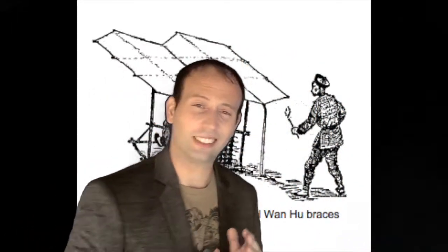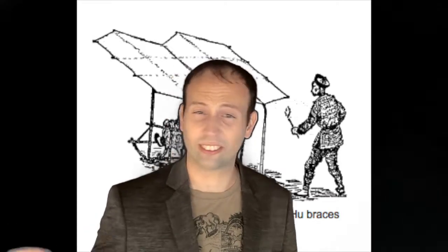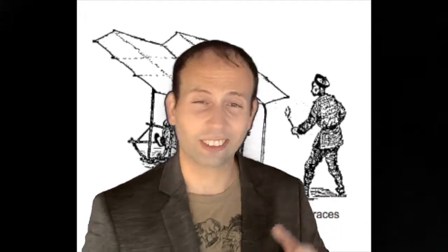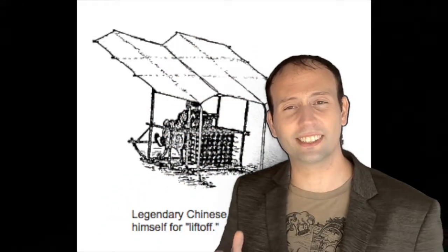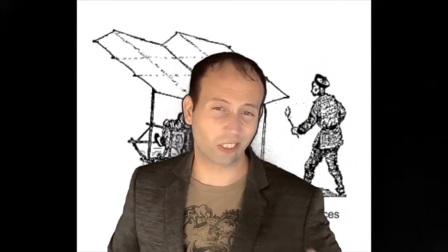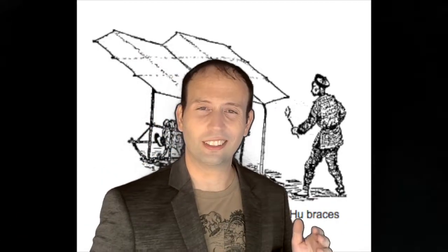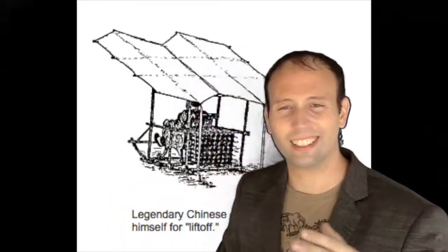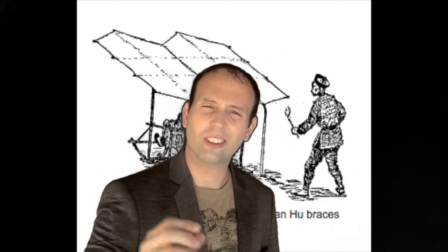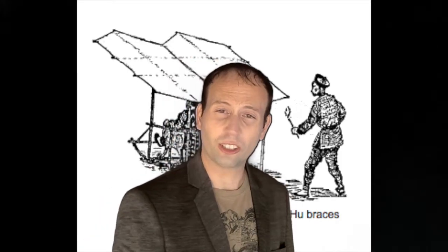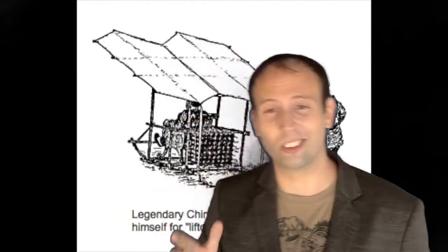Forty-seven rocket assistants, each armed with torches, rushed forward to light the fuses. A tremendous roar filled the air, accompanied by billowing clouds of smoke. When the smoke cleared, Wan Hu and his flying chair were gone. No one knows for sure what happened to Wan Hu.